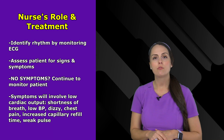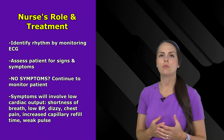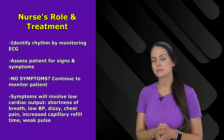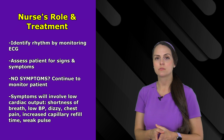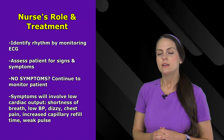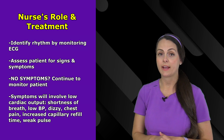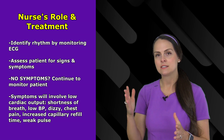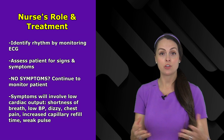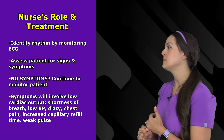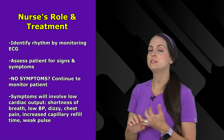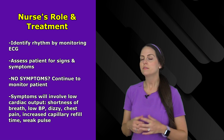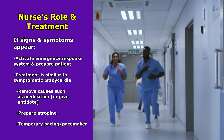As a nurse, we play a huge role in identifying this rhythm by analyzing the ECG. We then want to assess our patients for signs and symptoms. If they're not having any signs and symptoms, we want to continue to monitor them — no treatment is needed at that time. Signs and symptoms we're looking for involve low cardiac output, since this rhythm runs at 40 to 60 beats per minute. Many patients cannot tolerate a heart rate in the lower 50s — cardiac output falls. We look for shortness of breath, low blood pressure, dizziness, chest pain, increased capillary refill, and weak pulse, indicating poor perfusion.